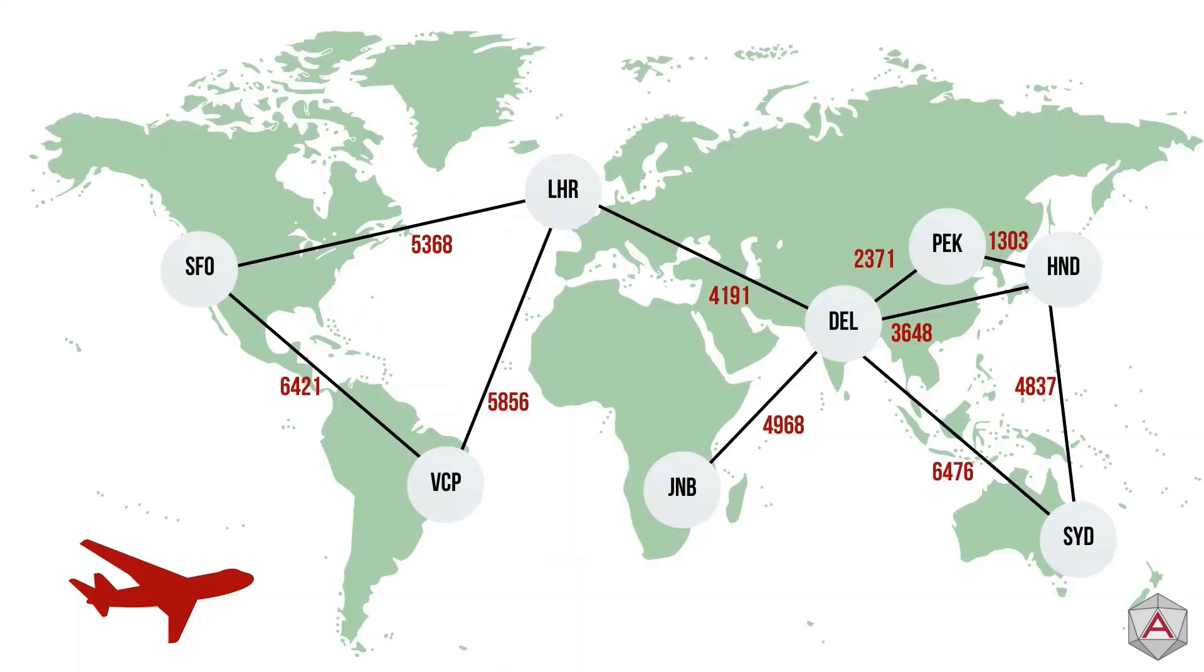As mentioned earlier, graphs don't have to be focused on people or a social network. They can represent anything. Here, we have a weighted graph representing airports across the world. In this example, the nodes are the airports and the edges are routes between these airports, weighted by the number of miles. We could use this to calculate the shortest route between two points.